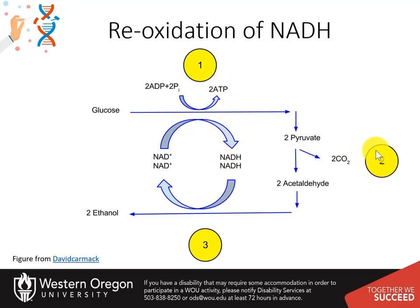In step two, the two pyruvates are converted into two acetaldehydes and give off two carbon dioxide as a byproduct. In step three, the two acetaldehydes are then converted to two ethanol by using the electrons from NADH, converting NADH back into NAD+.